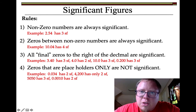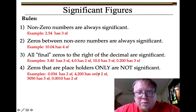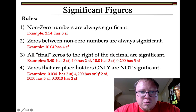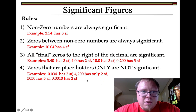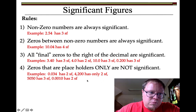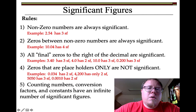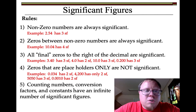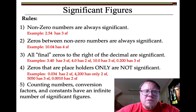This is the rule that's going to throw you off the most — honestly, this is the hardest rule. The last rule: counting numbers, conversion factors, and constants.